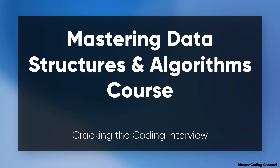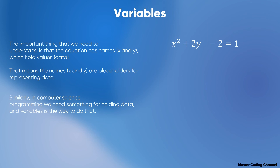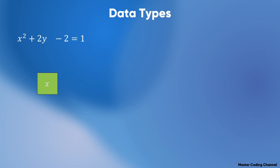Let's learn about variables first. The important thing to understand is that in an equation, names like x and y hold values — the data. Consider this equation: x squared plus 2y minus 2 equals 1. The names x and y are placeholders for representing the data. Similarly, in computer science and programming, we need something for holding data, and variables are the way to do that. These are the placeholders or variable holders and data holders in programming. The data types, as we learned in the Java, Android, or Kotlin course presented on our Master Coding Channel...